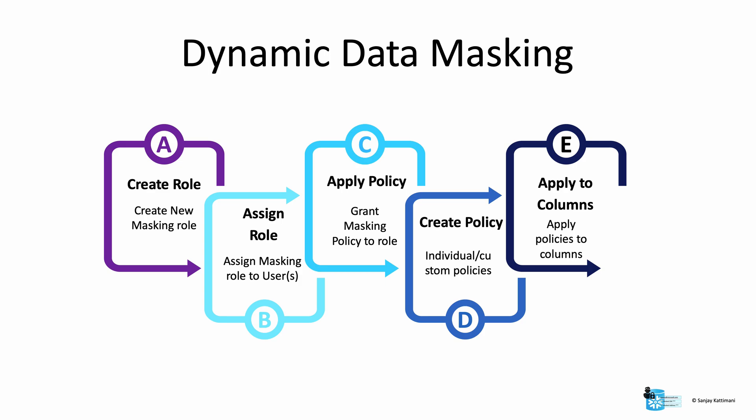In order to create an effective dynamic data masking policy to orchestrate your organization's data protection policies, you need to follow these steps. First, we create a restricted masking role called masking admin. Assign the masking role to users. Grant masking policy to this role masking admin. Create individual or custom policies as per your needs — in our case it will be for SSN and email ID. Finally, apply the policies to individual columns that you would like to mask.